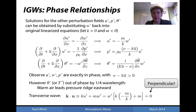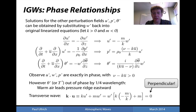In summary, u-prime, w-prime, and p-prime are all exactly in phase with one another when (ν − k·u-bar) > 0. However, theta-prime or T-prime are out of phase in internal gravity waves by one quarter of a wavelength. Further, internal gravity waves are transverse — the phase vector k, perpendicular to constant phase lines, dotted with the velocity field gives zero, confirming these two vectors are perpendicular to one another.